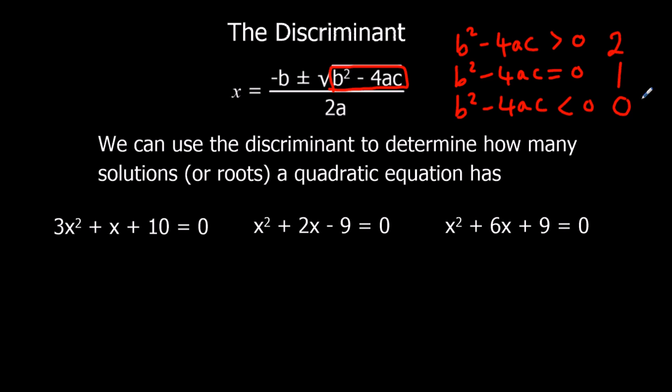So, no answers — if you try to put it in the calculator it'll come up with an error. So we use b squared minus 4ac to tell us how many solutions or how many roots a quadratic equation has.